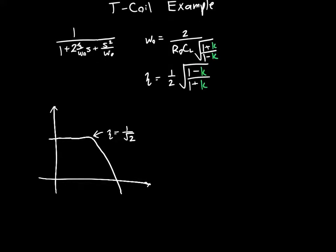Similarly, if we have a zeta that's less than 1 over square root of 2, then we're going to have a little bit of peaking in the frequency response. And if we have a really small zeta, we'll have a very large peak. And as zeta approaches 0, this peak becomes infinitely tall.